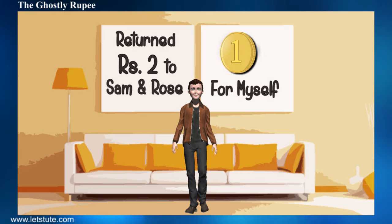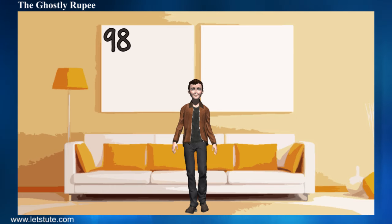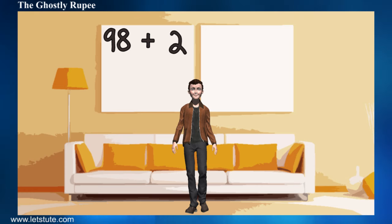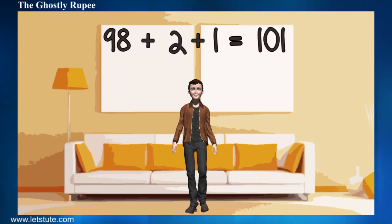You returned 2 rupees to Sam and Rose and kept one for yourself. After you have returned 2 rupees to them, you need to give them back 98. So let's add again: 98 plus 2 plus 1. Remember, you kept this 1 rupee for yourself — which totals 101.